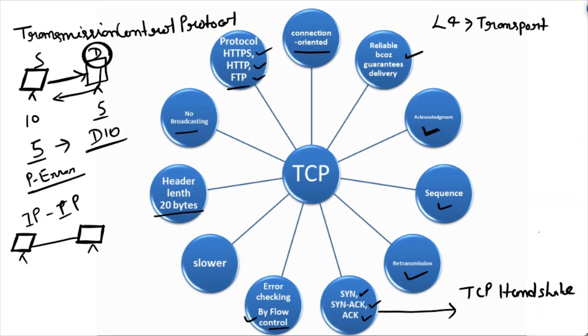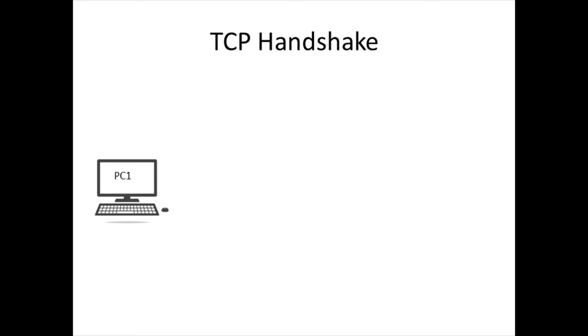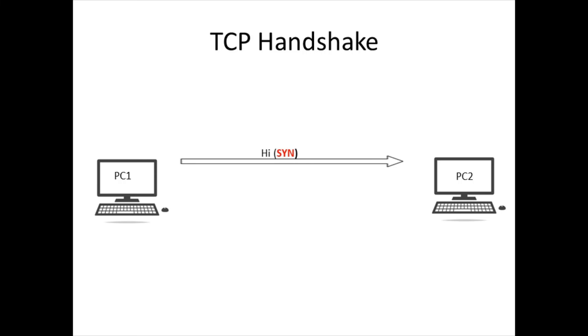Now let's see how the TCP handshake occurs. We have PC1 and PC2. PC1 will send a SYN packet to PC2 with a hello message. The SYN packet has been sent from PC1 to PC2.